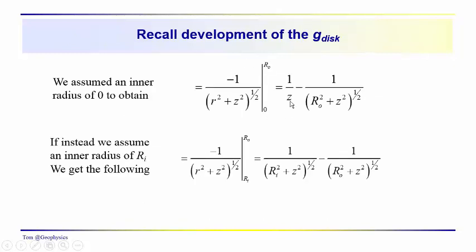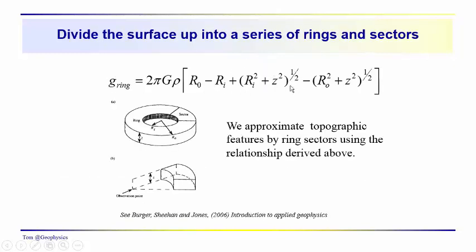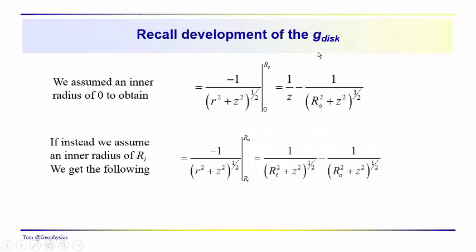Let's come back and think about where this expression comes from for the ring. If you go back to our development of the acceleration due to gravity over a disc or a vertical cylinder, we assume that the inner radius was zero. And we obtain this definite integral, which evaluated gives us, we just had an outer radius and inner radius of zero. And we ended up with one over z, the thickness of the cylinder, minus one over r0 squared plus z squared to the one half power.